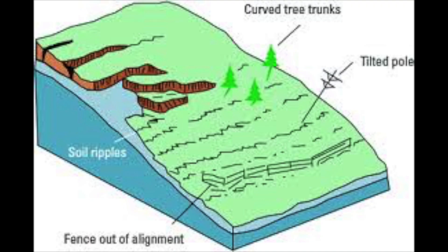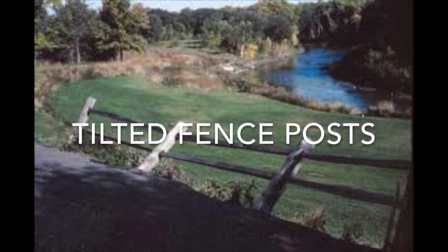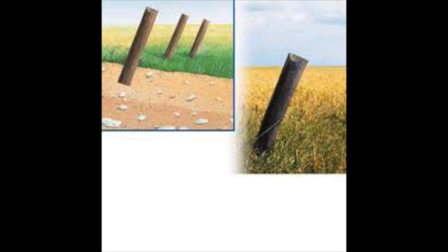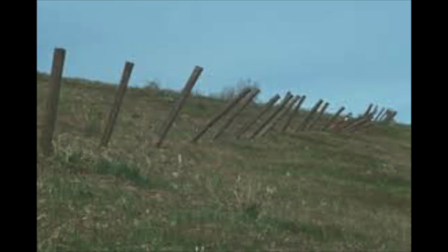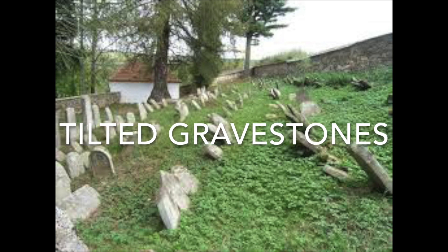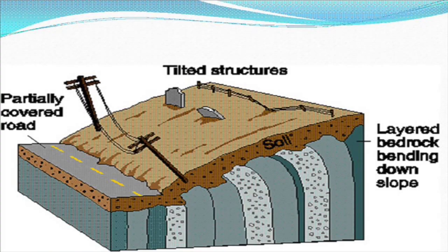As well as curved tree trunks, other clues to look for are tilted poles, soil ripples, and fences out of alignment. Fences may become tilted due to the motion of the soil beneath them, tilting in the direction of soil motion. Tilted gravestones are also a clue that soil creep is occurring. Soil creep happens so slowly it's hard to detect; however, you can look for clues like tilted structures and partially covered roadways.